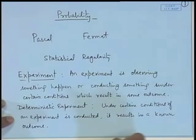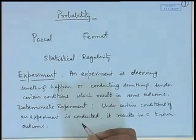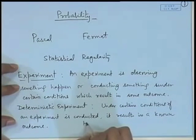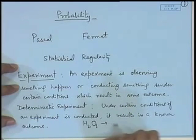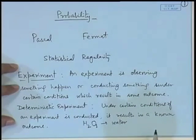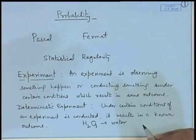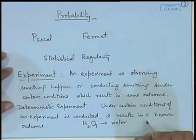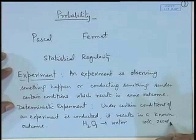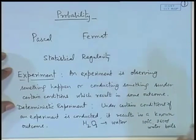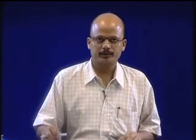Many classroom experiments in physics, chemistry, biology, etc. are like this. For example, if I have two molecules of hydrogen and one molecule of oxygen, we know the outcome is water. Or suppose we put water in a vessel and heat it — when the temperature reaches 100 degrees Celsius at atmospheric pressure of around 700 mmHg, the outcome is that the water will boil. These experiments are called deterministic experiments.